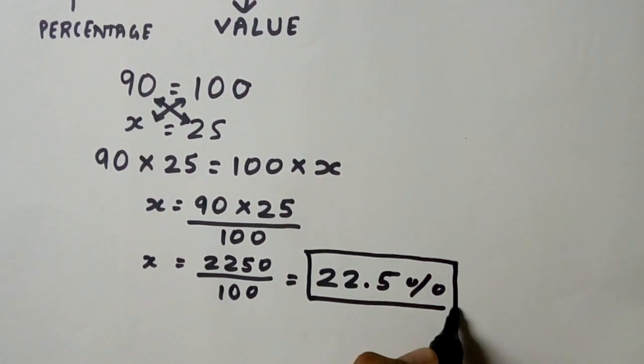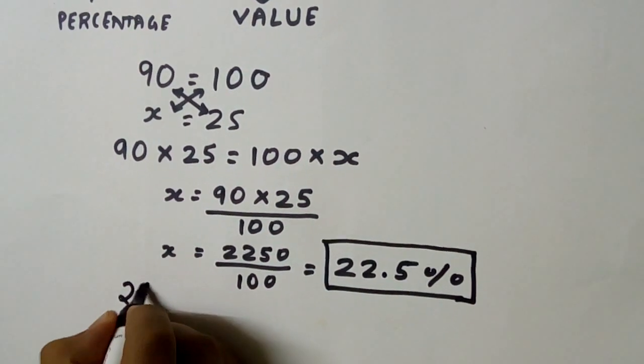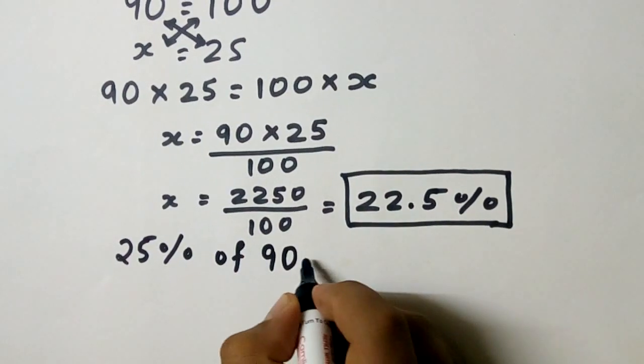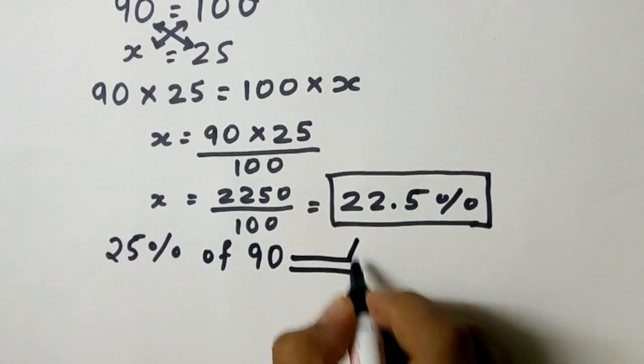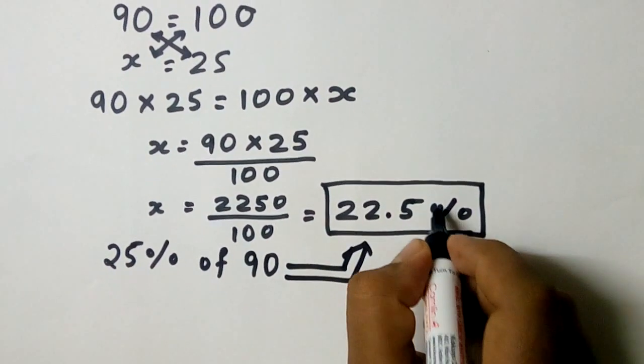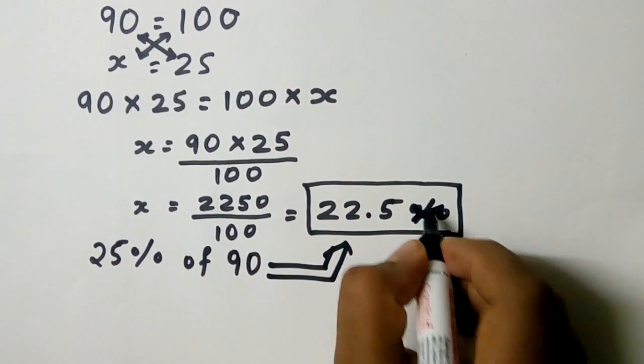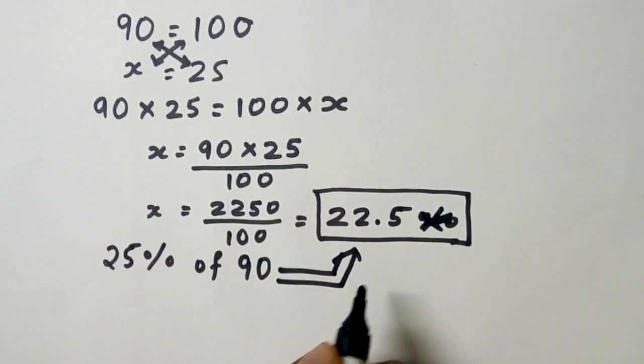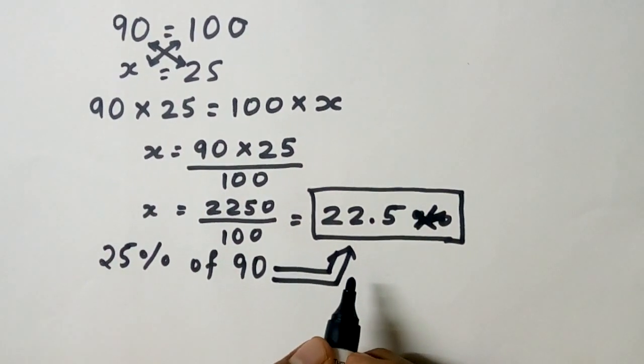So the 25% of 90 is nothing but 22.5. I am sorry, it is the value, not percentage. So 25% of 90 is 22.5. Thank you so much for watching.